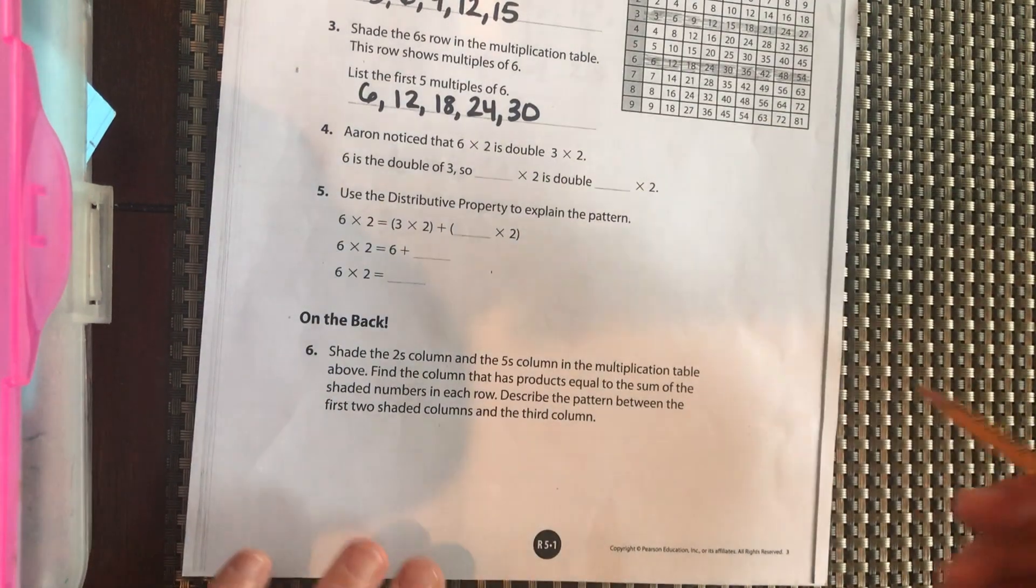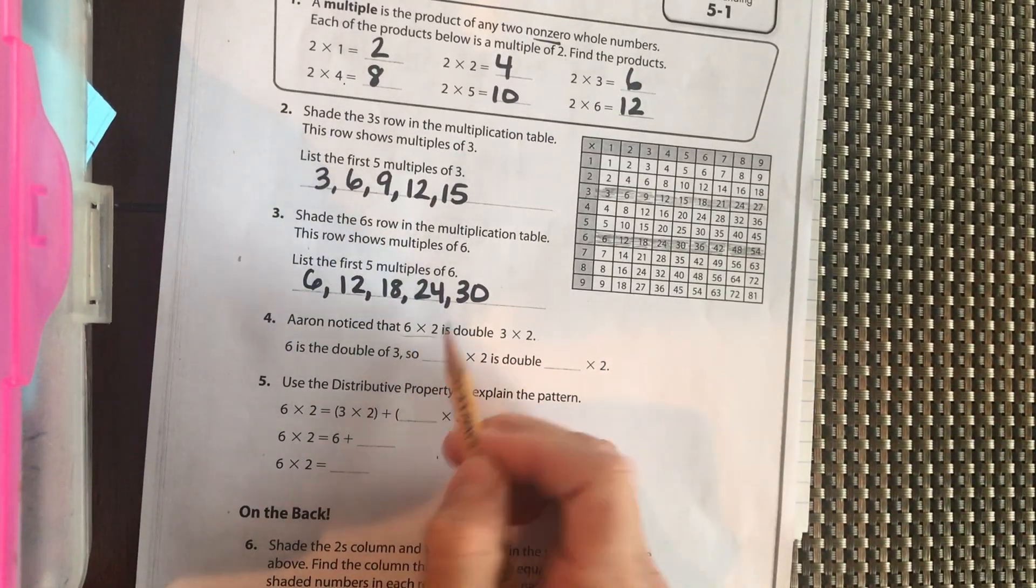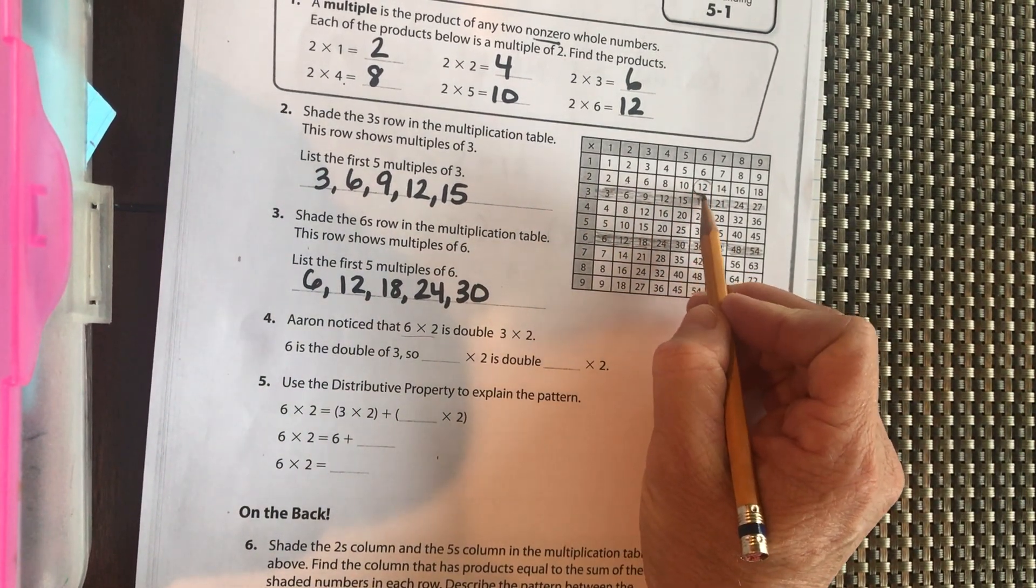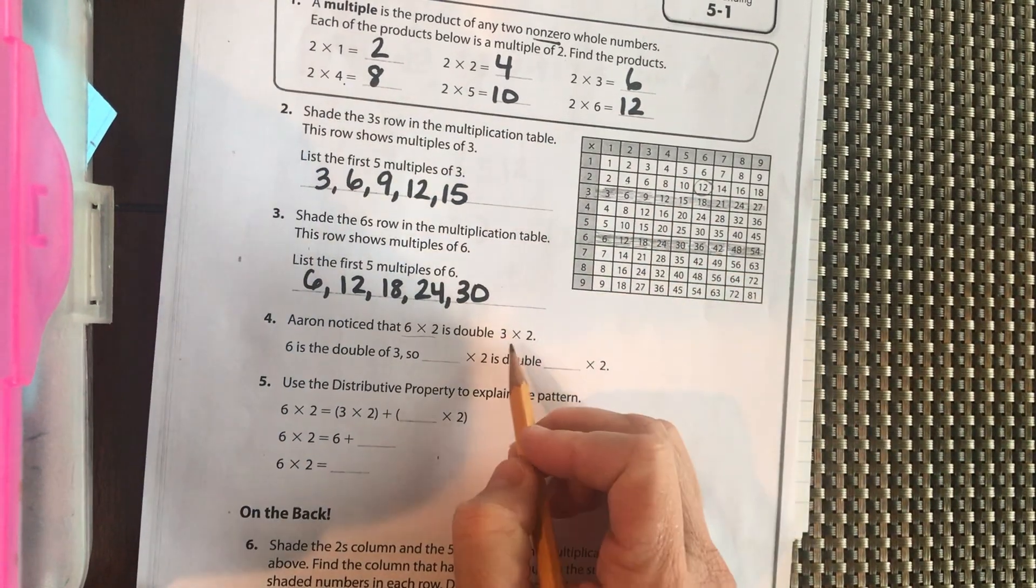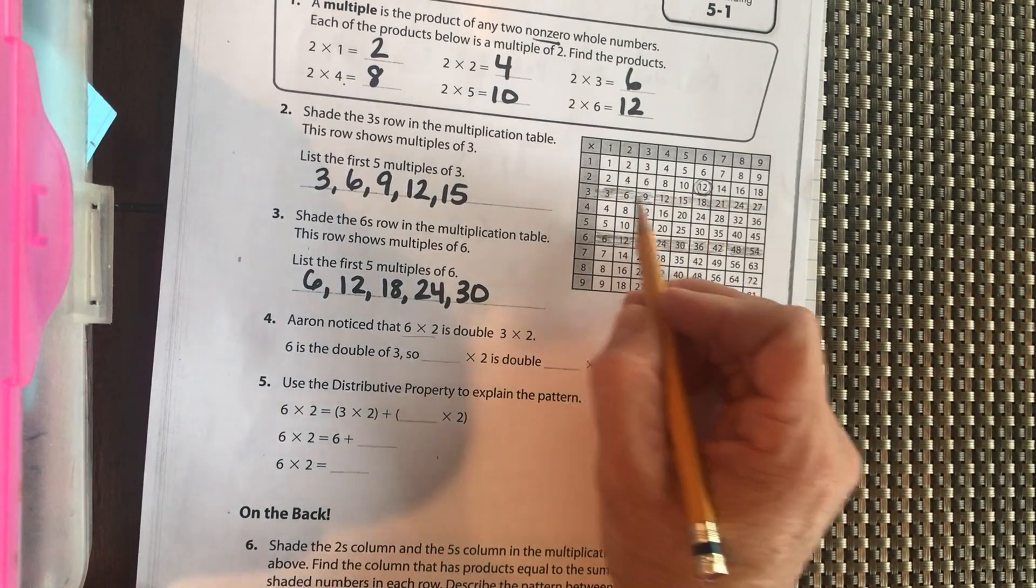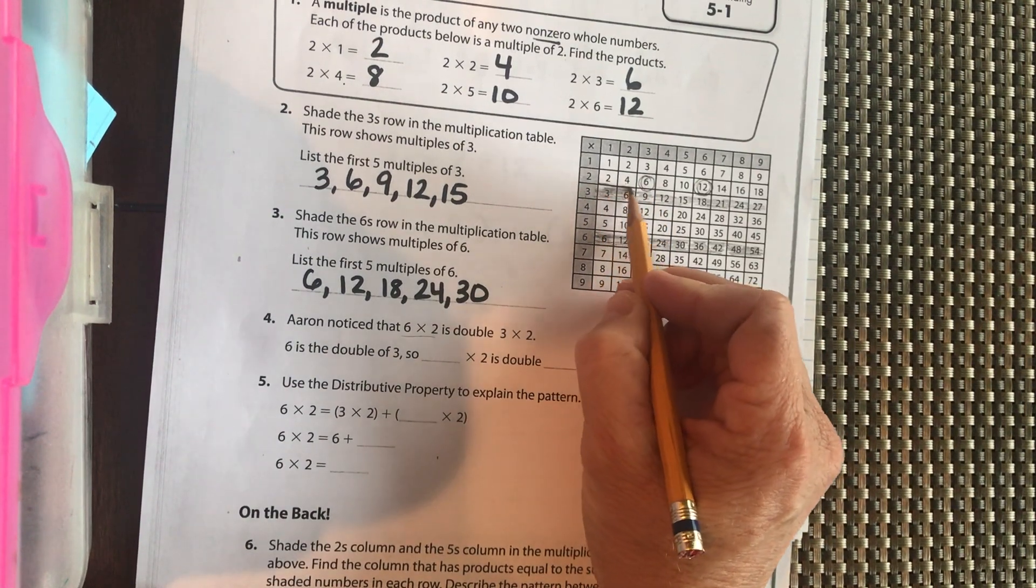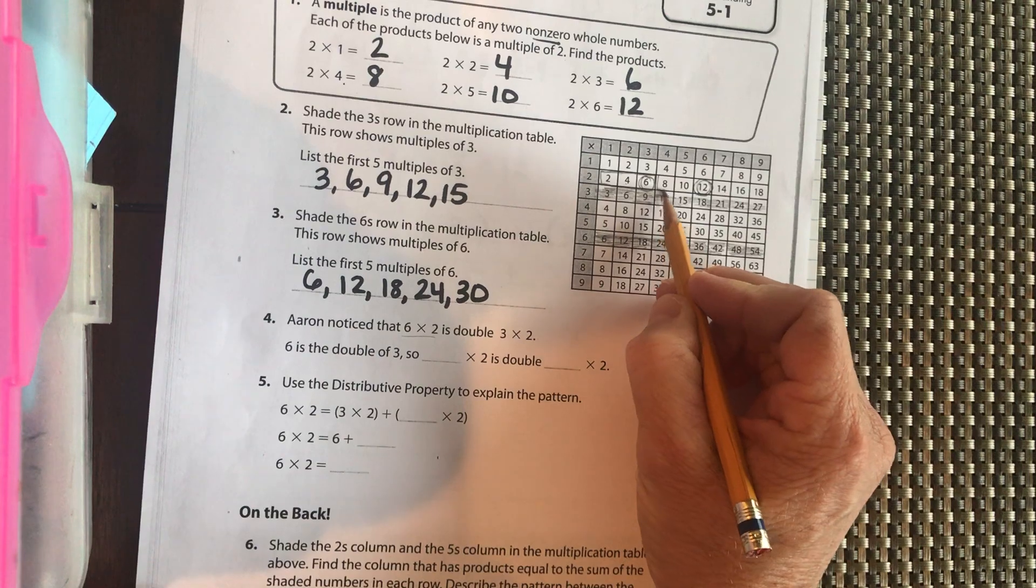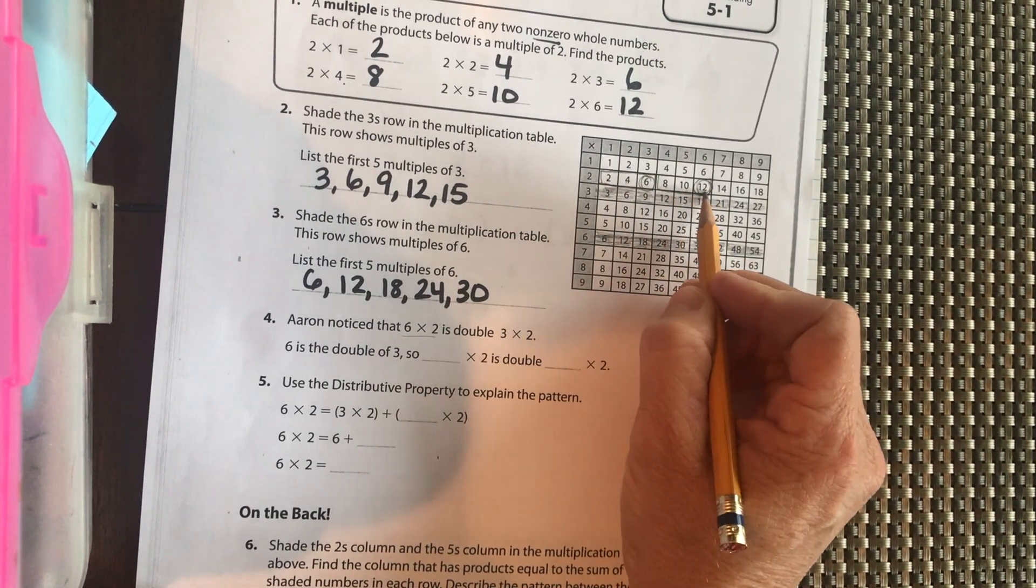Okay, so if we have 6 groups of 2 right here. So we take our 2s, 1, 2, 3, 4, 5, 6. We're at 12. 6 groups of 2. The product of 12 is double the product of 3 groups of 2, which makes sense because this is 3 groups of 2, and this is 3 groups of 2, right? 2, 2, 2, 2, 2, 2.